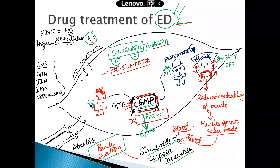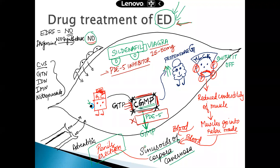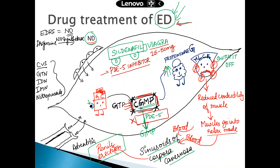How much sildenafil are you supposed to take? Sildenafil is taken in a dose of 25 to 50 mg. It is indicated for the treatment of erectile dysfunction in men due to organic or psychogenic causes. Adverse effects of sildenafil include headache, nasal congestion, flushing, and a mild decrease in blood pressure.